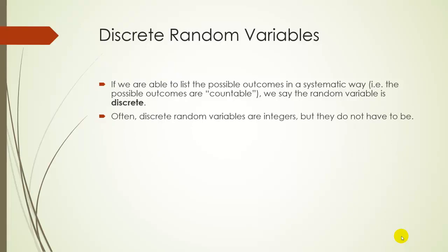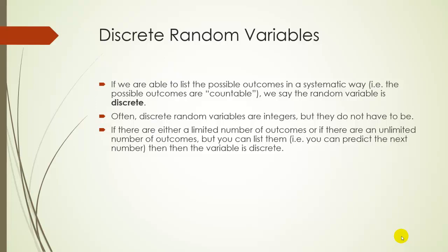Often discrete random variables are integers, but they don't have to be. There is either going to be a limited number of outcomes, like only certain numbers are possible, or it could be maybe a whole bunch of numbers, an infinite number of numbers, but there's a pattern to them. So you can actually list them all if you had maybe an infinite amount of time to do so.